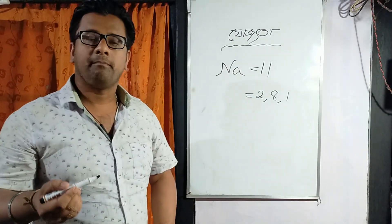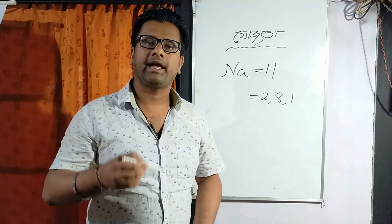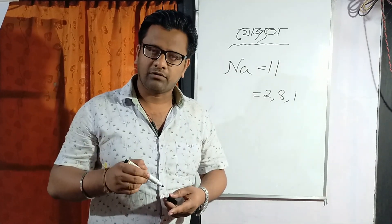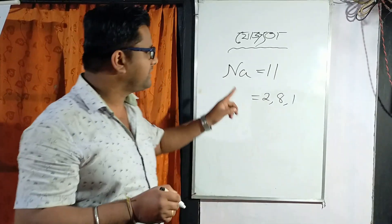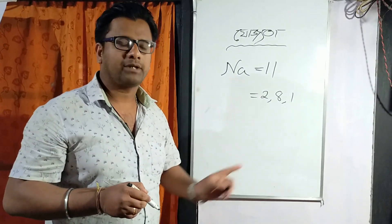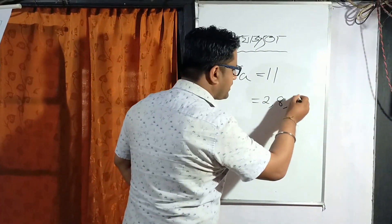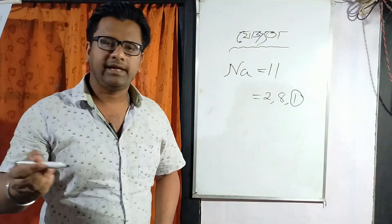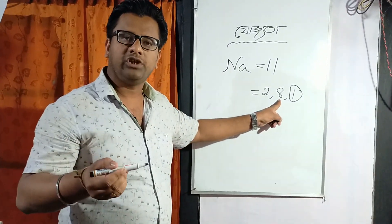The sodium electron configuration is 2, 8, 1. At this point, it is very important that we are given this electron, and you can find this electron.